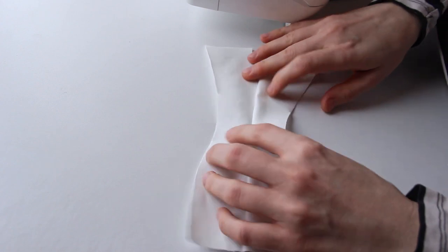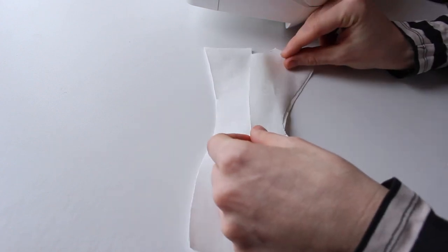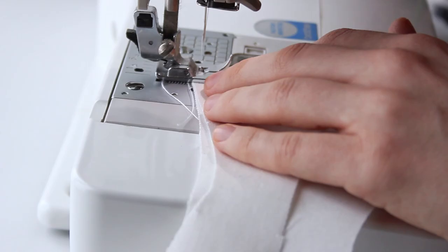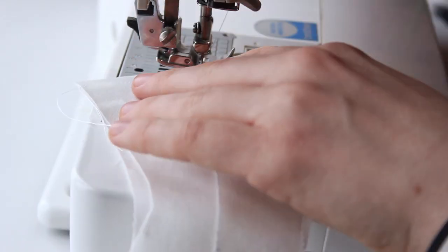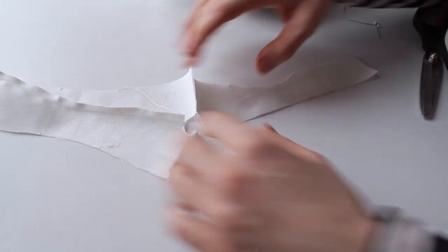Next, open the seam so the right side is up and place the back pieces on top right sides together. Pin both shoulder seams and stitch them together. It should look something like this.